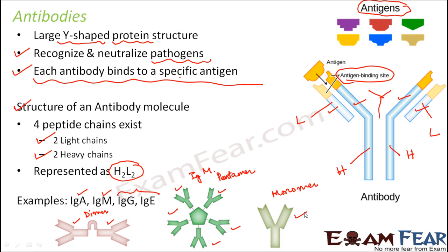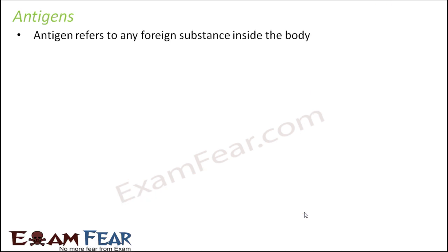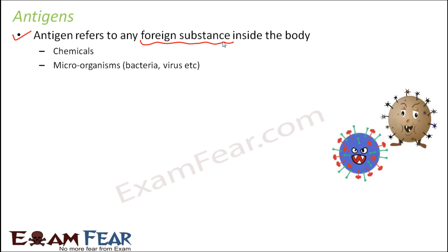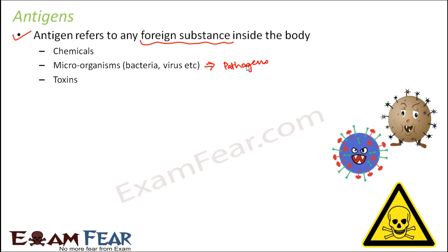The term antigen refers to any foreign substance inside the body. They do not necessarily have to be microorganisms — they can be non-living objects as well. Antigens can be chemicals, microorganisms like bacteria or viruses (which we call pathogens), toxins, or even pollen — since pollen entering the body can cause allergies. All these are antigens because they are foreign substances that may enter our body.